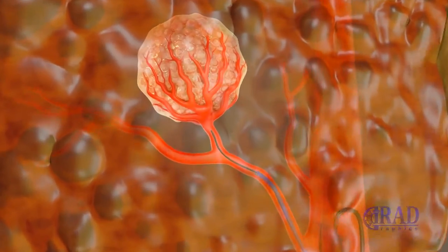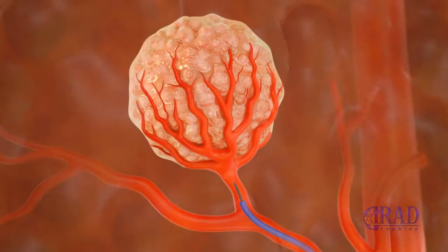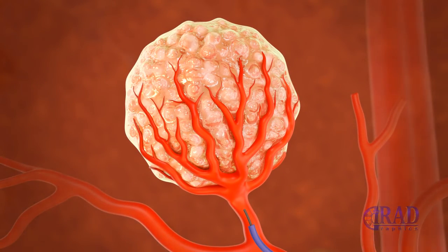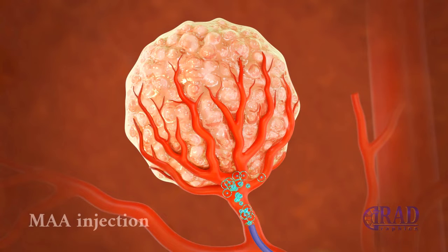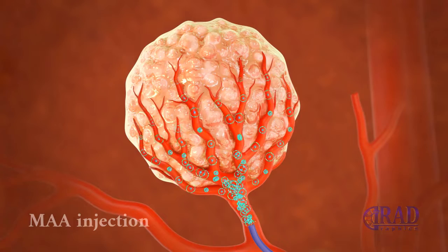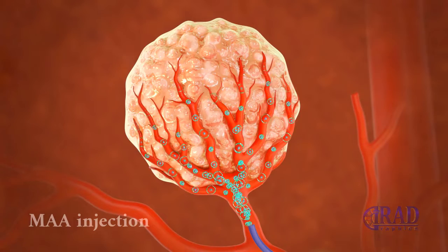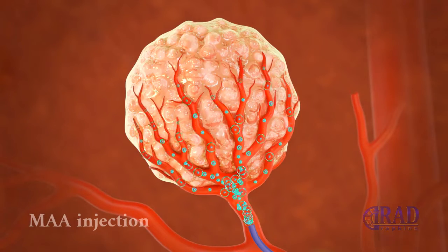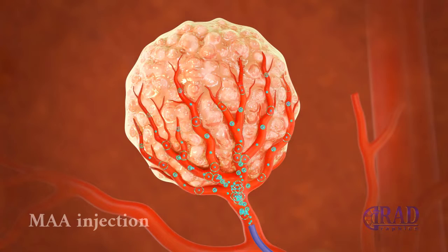Upon identifying and selecting the target vessels, the radiopharmaceutical technetium-99m macro aggregated albumin is administered into the target vessel. These particles serve exclusively diagnostic functions, assisting in the mapping and shunt evaluation during the SPECT study. Importantly, they do not emit therapeutic radiation.